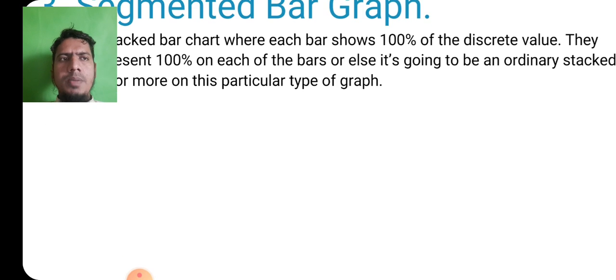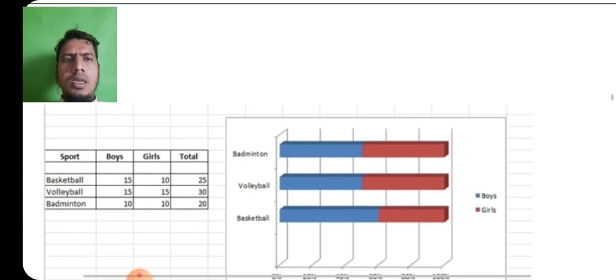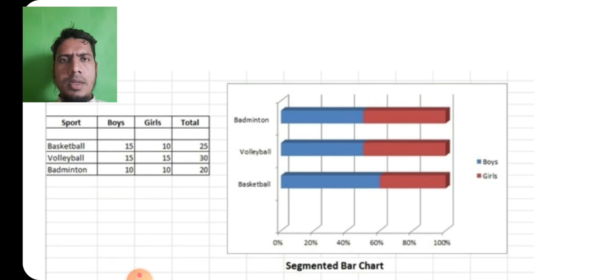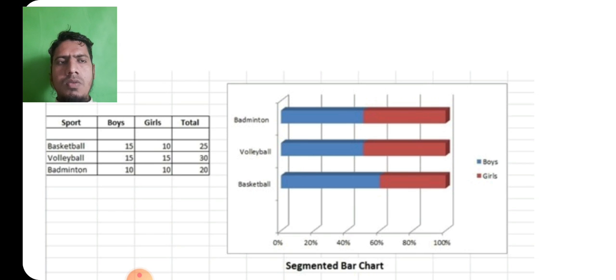Segmented bar graph कैसी होती है? यह आपको मैं दिखाता हूँ कि यह एक segmented bar graph है. यहां भी बार ही हैं, लेकिन यहां difference यह है कि यहां पर जो discrete values हैं, वो 100% शो की जाती है. कैसे 100% शो की जाती हैं, वो हम मिसाल से समझते हैं.